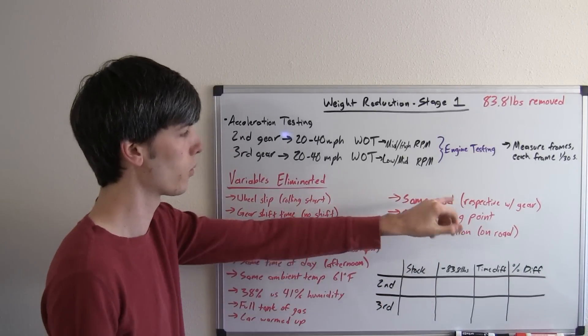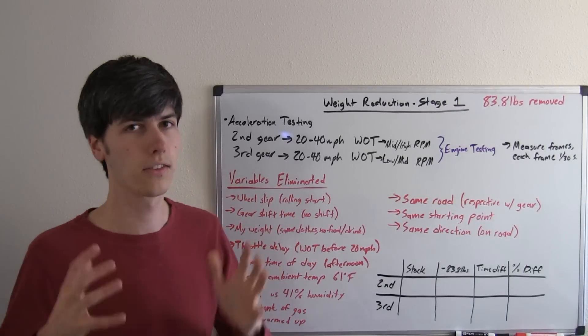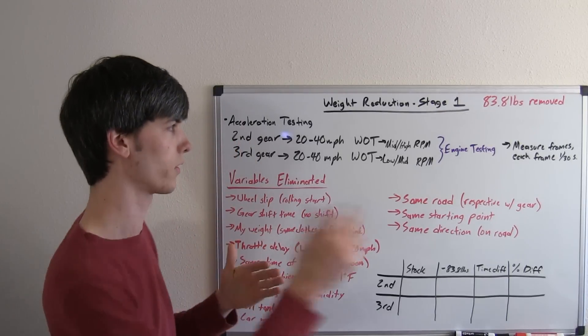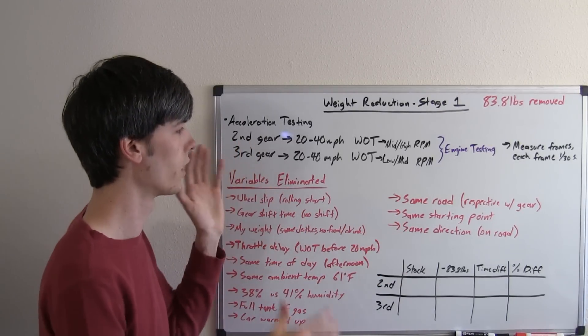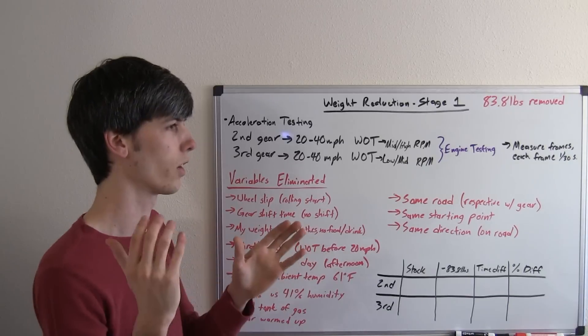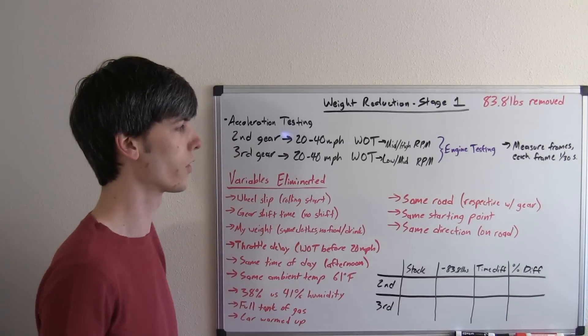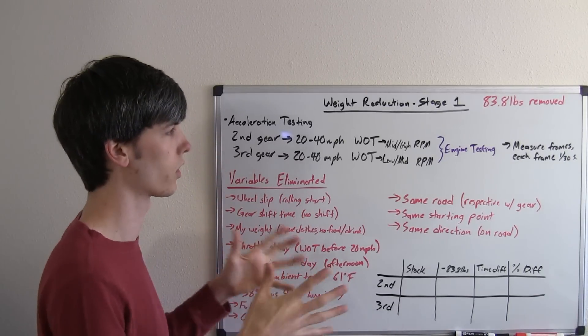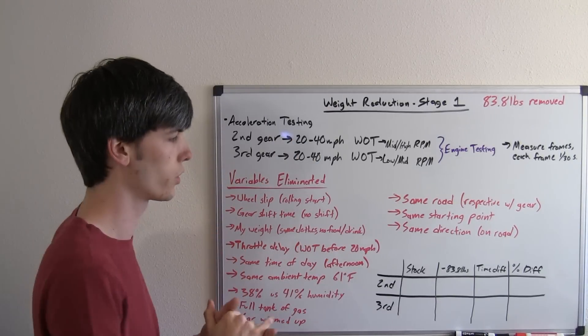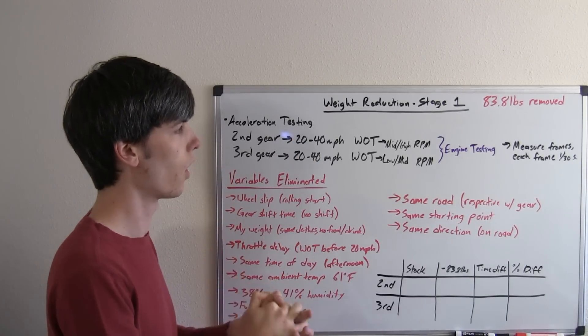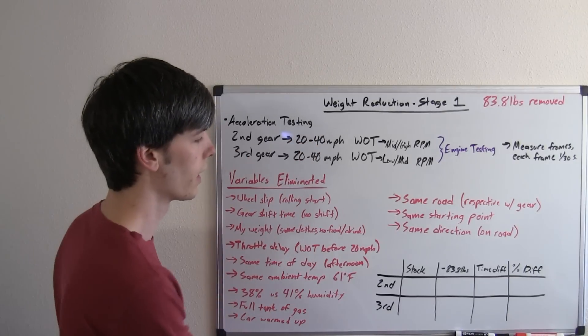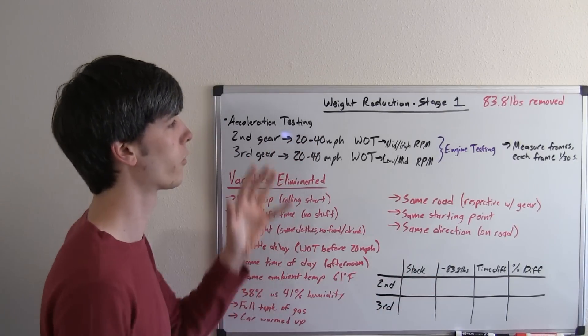This was all done on the same road, from the same starting point, in the same direction. So all my second gear tests start at the same point on the same road, going in the same direction. All my third gear, same road, but different direction. It's just coming back. But basically all the third gear tests are done one direction. All the second gear tests are done one direction. So that's eliminating any variables that could occur due to the road conditions, going uphill or downhill. It is a fairly flat road that I chose, so basically tried to eliminate all of those factors so that the only difference between these two tests will be the weight, and that will give us the actual improvement from removing the weight.